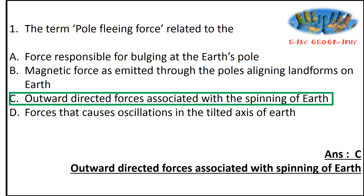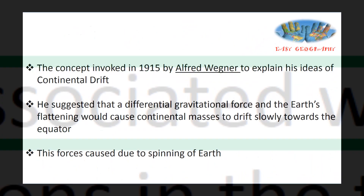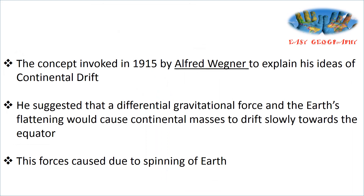The answer is Option C: Outward directed forces associated with the spinning of Earth. Option A — 'force responsible for bulging at the Earth's pole' — is a wrong statement; this force is responsible for bulging at the equator. The pole-fleeing concept was invoked in 1950 by Alfred Wegener to explain the ideas of continental drift.